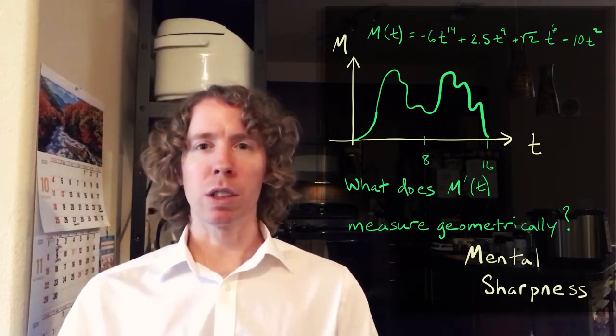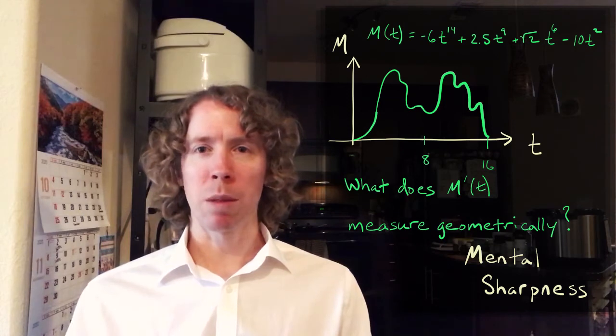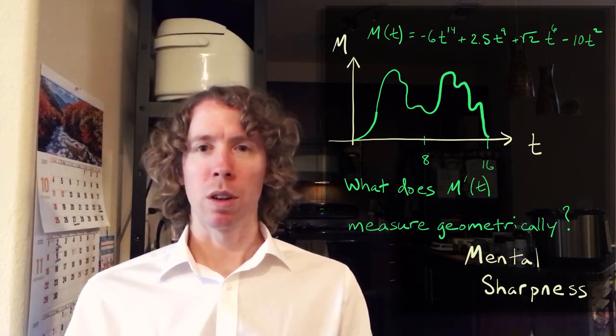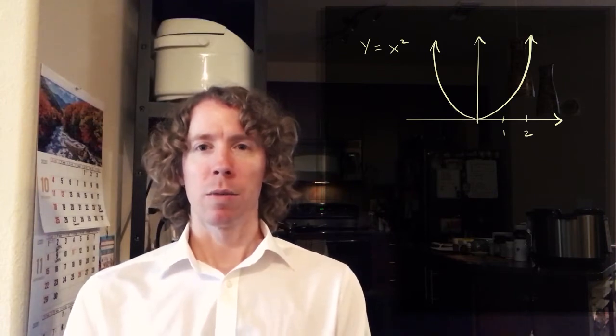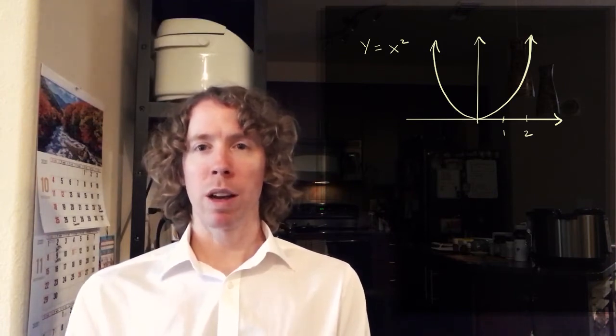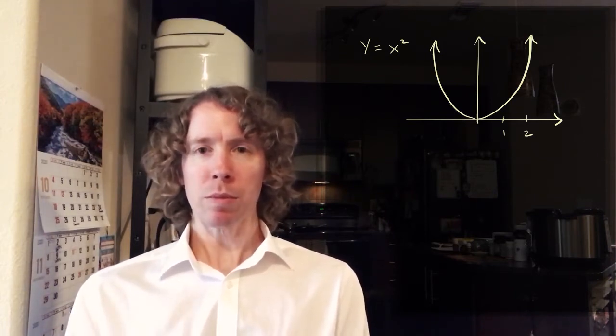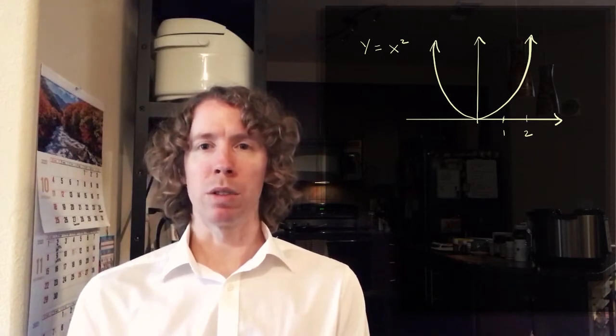So let's just use a really simple example. Let's just use Y equals X squared or F of X equals X squared. We know how to take the derivative of that. It's really simple. We know it's just going to be two times X.